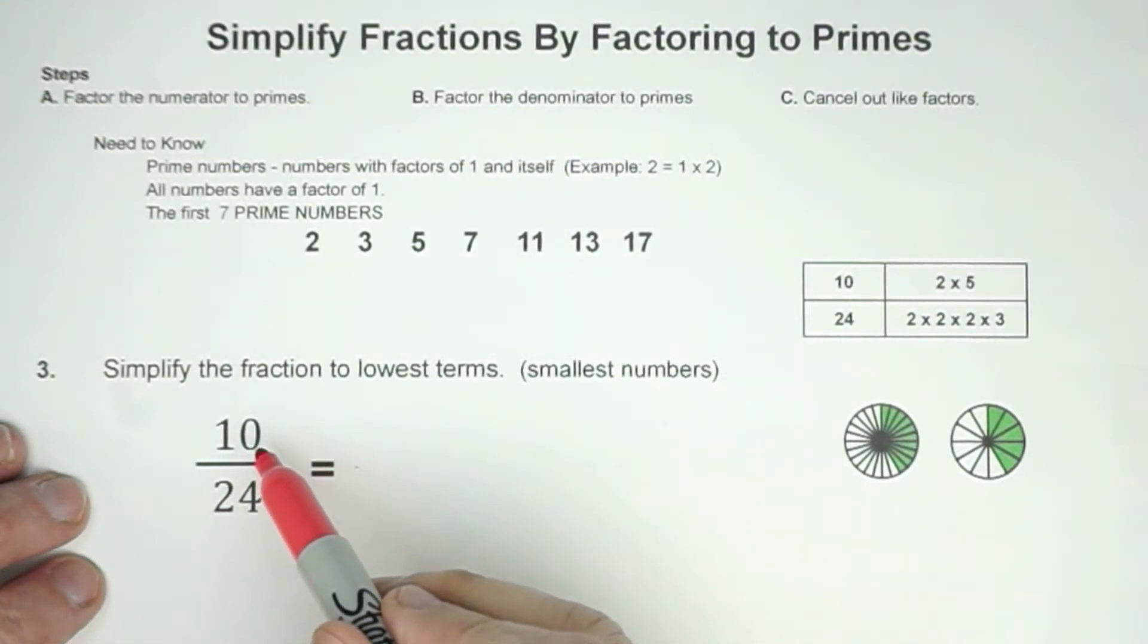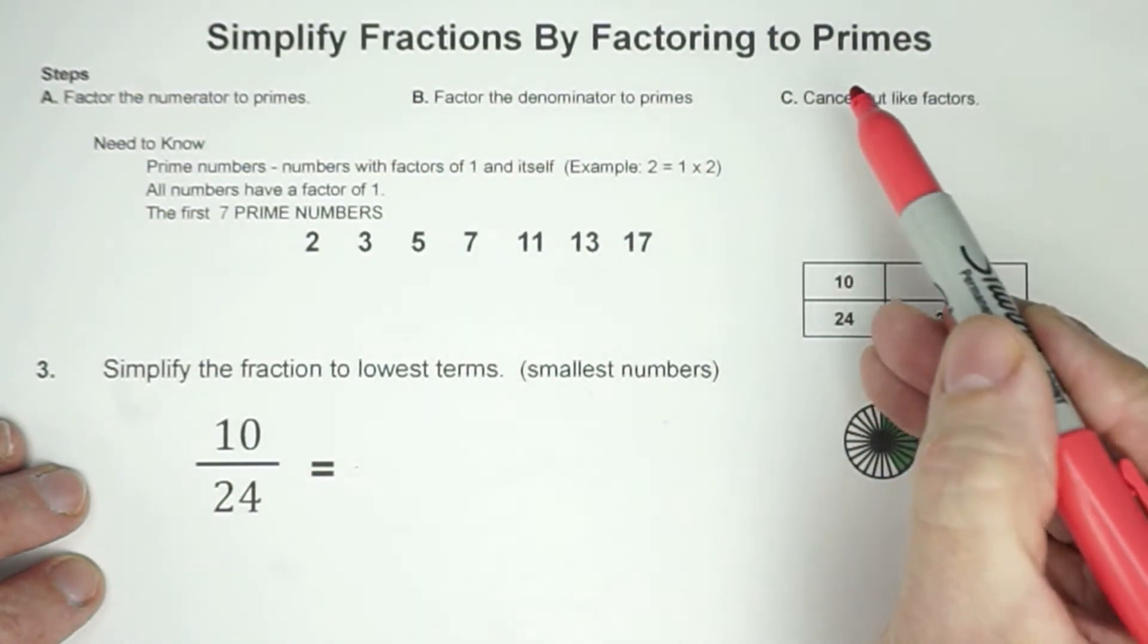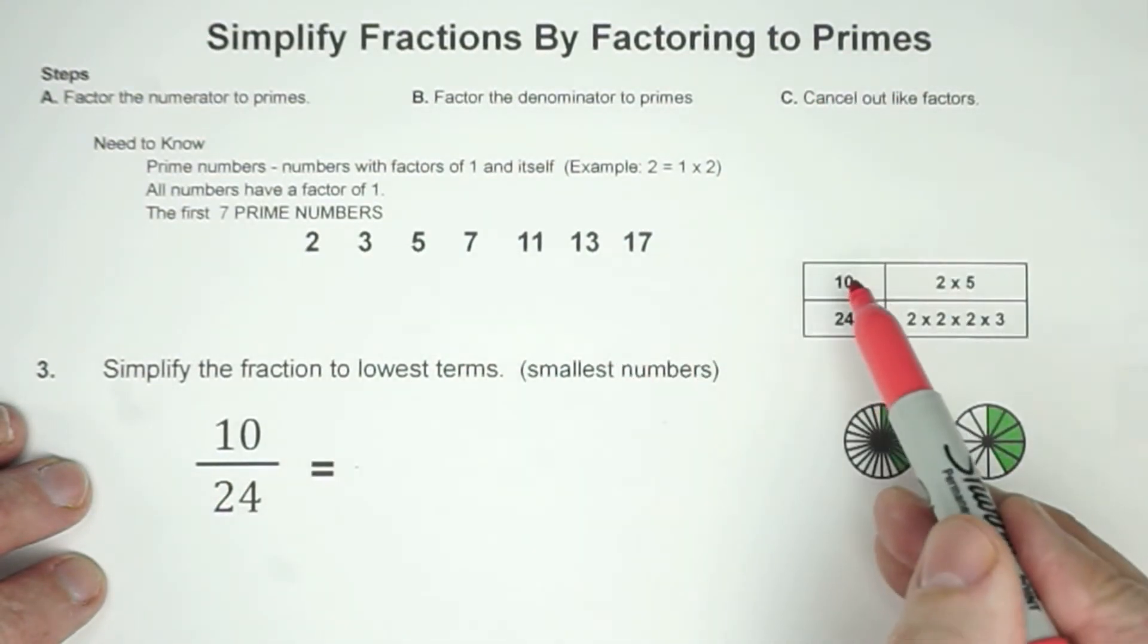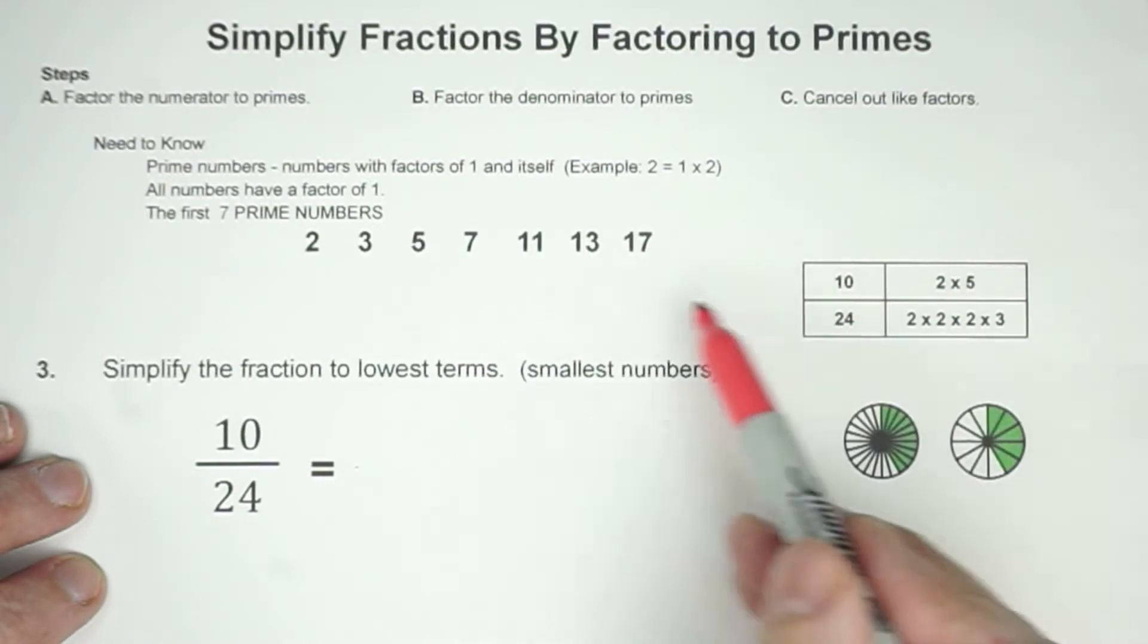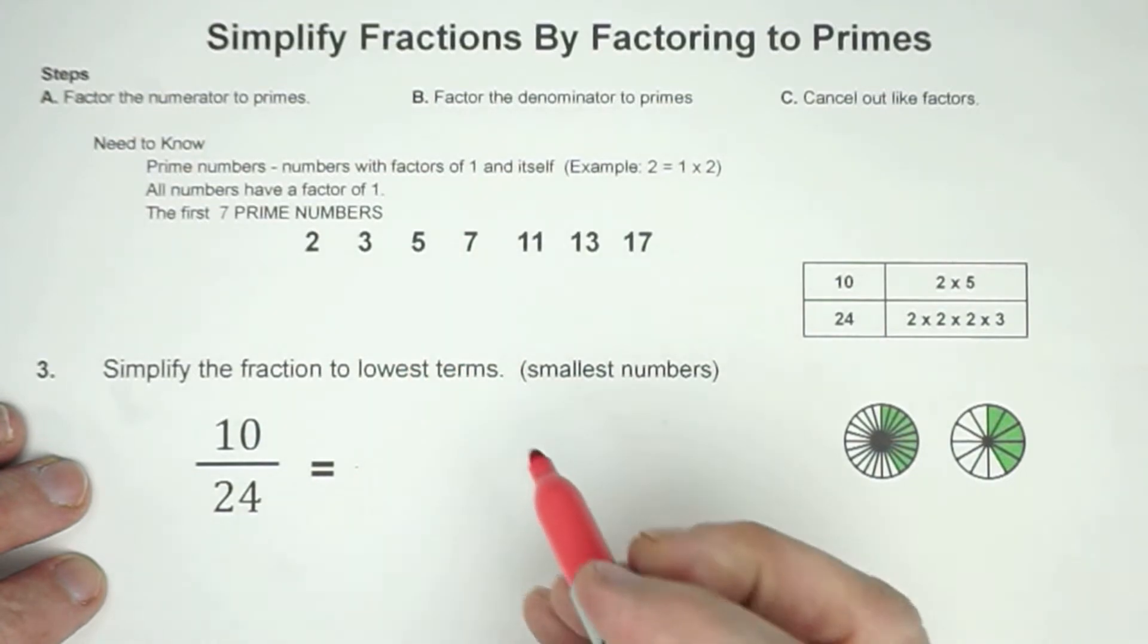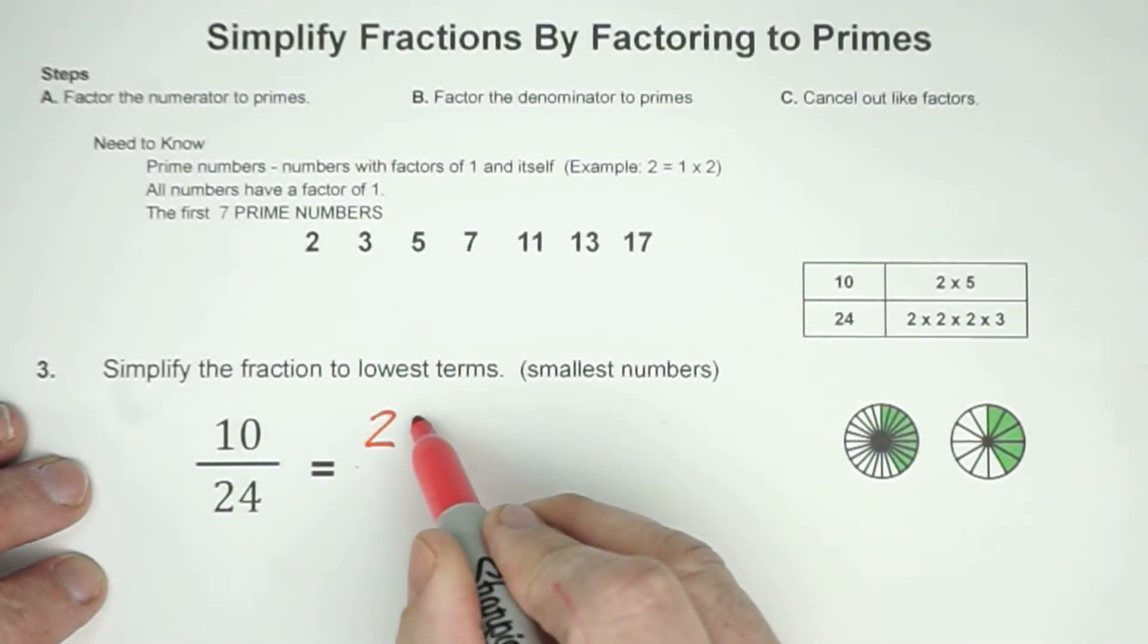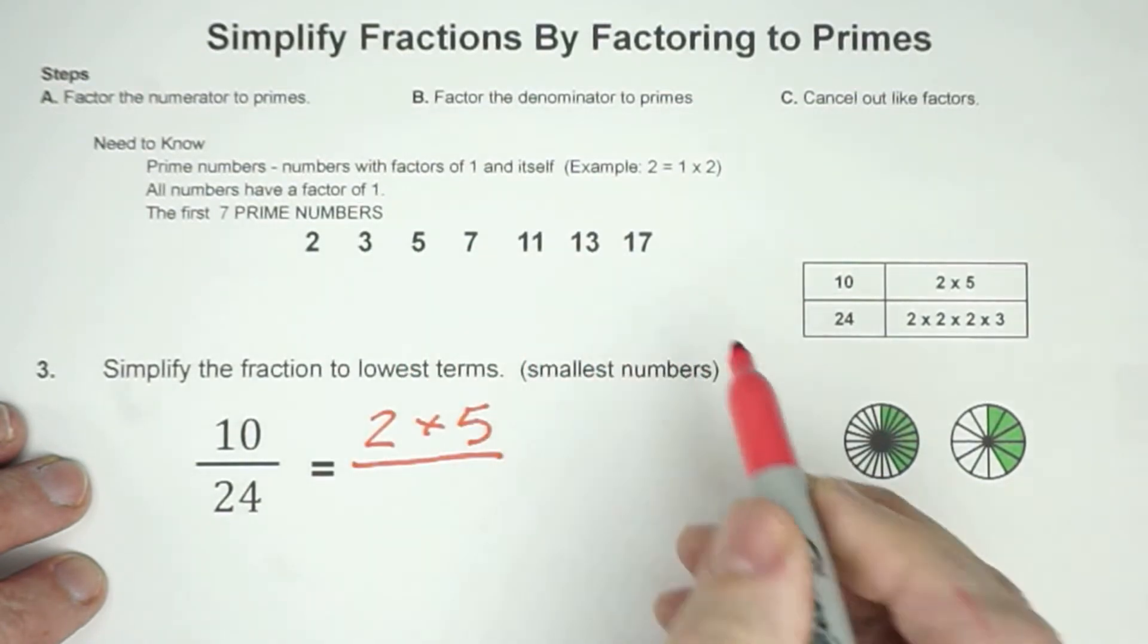Let's try 10 twenty-fourths. We're going to simplify the fraction to lowest terms, using our strategy of factoring to primes. 10, the prime factors are 2 times 5. Again, see how there's a 2 and a 5. So they have to be prime numbers, which is why you want to know those numbers.